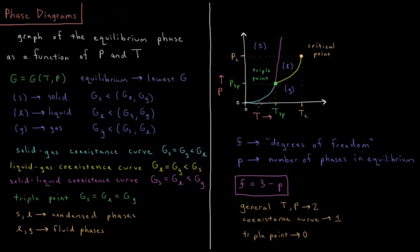Also notable on this graph is the critical point, which occurs at the critical temperature and critical pressure. This results in some properties of gases mentioned in the chapter on the behavior of gases.